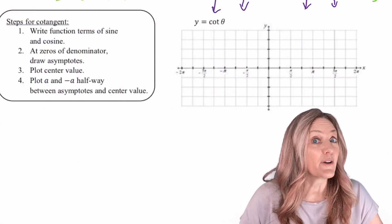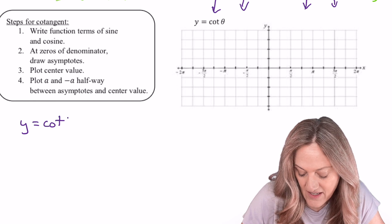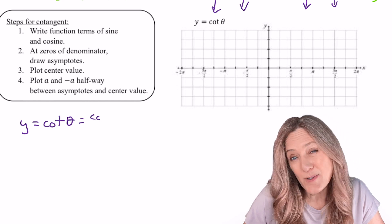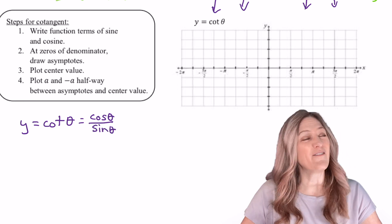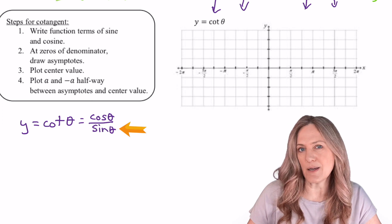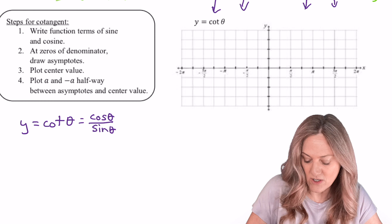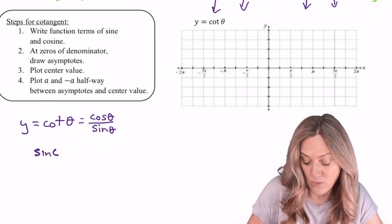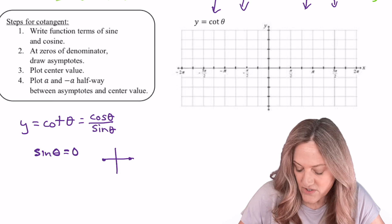Last, let's look at the graph of cotangent. Remember, y = cot θ would be the same as cos θ divided by sin θ. Well, to determine where my vertical asymptotes are, I need to know where does the denominator equal zero. Well, the denominator is the sine function, so I really am asking myself where does sin θ equal zero.